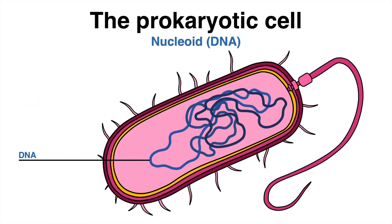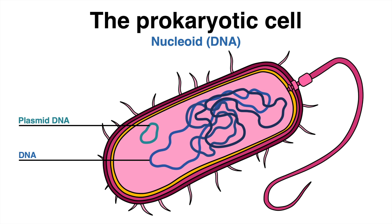Prokaryotic cells have a circular piece of DNA called the nucleoid. The nucleoid contains all the genetic information of the cell and is not surrounded by a nuclear membrane like in eukaryotic cells. In addition to the nucleoid, prokaryotic cells may also contain plasmids, which are small circular pieces of DNA that can be transferred between cells.